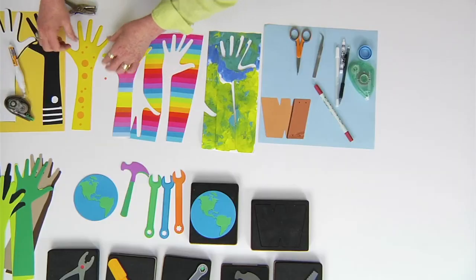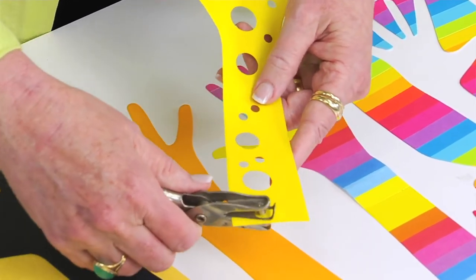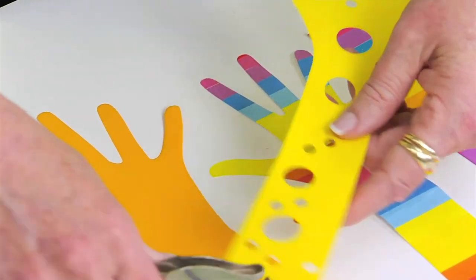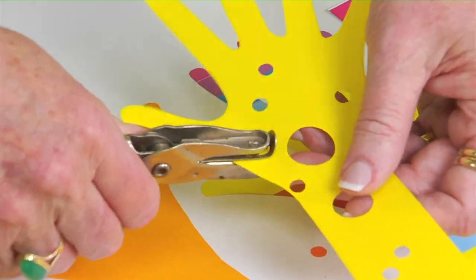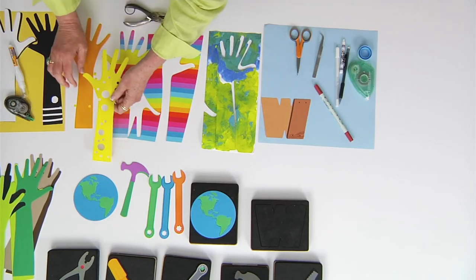If you have polka dots, a fast way of doing that is to take circle punches and just start punching all along one of the dies, in this case out of a lighter yellow.